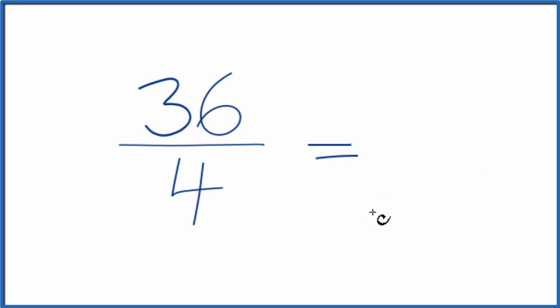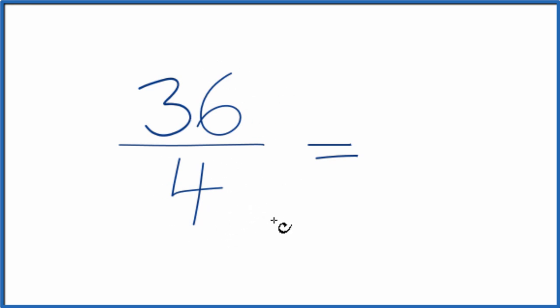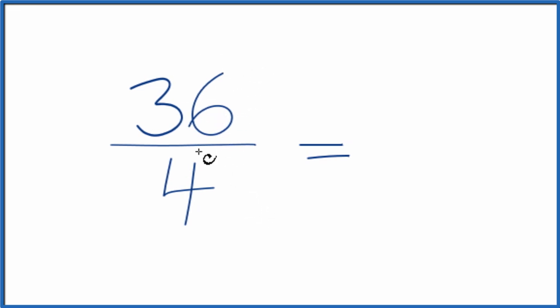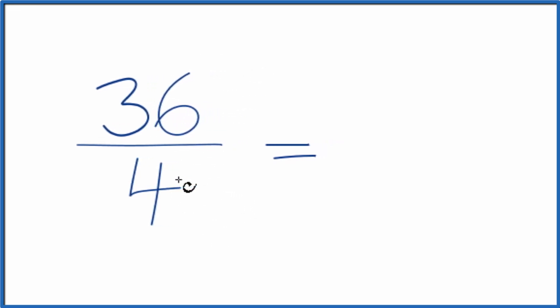To do that, we need to find a common factor, something that goes into 36 and 4. I know that 4 times 9 is 36, so I think the greatest common factor is probably going to be 4 here.